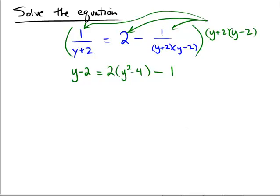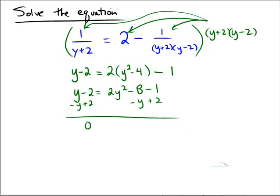Now we have no denominators and we just use our other algebra skills to solve the equation. y minus 2 equals 2y squared minus 8 minus 1, using the distributive property. Let's subtract y and add 2 from both sides, so that we get 0 equals 2y squared minus y, and negative 8 minus 1 is negative 9, plus 2 is negative 7. So we get a minus 7 in that place.